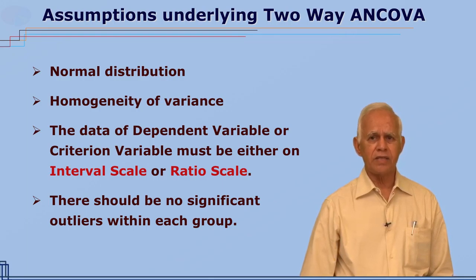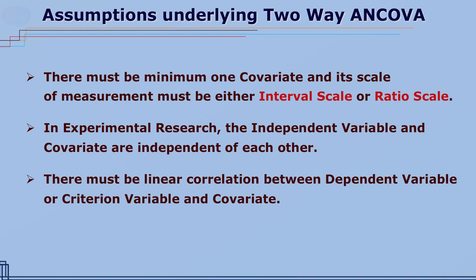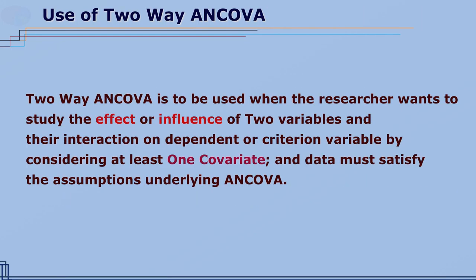The assumptions are the same as already studied under one-way ANCOVA. Two-way ANCOVA is to be used when the researcher wants to study the effect or influence of two variables and their interaction on the dependent or criterion variable, by considering at least one covariate, and the data must satisfy the assumptions of analysis of covariance.